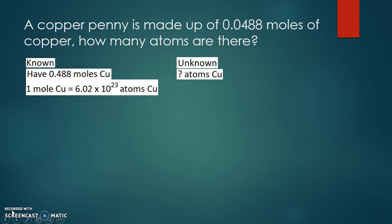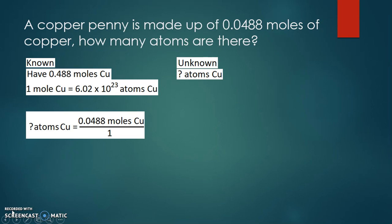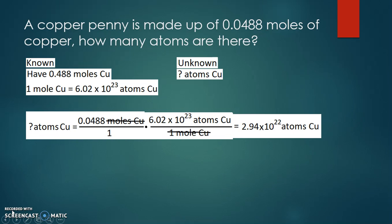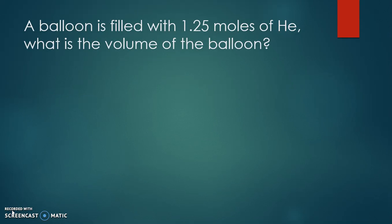Taking our given of 0.0488 moles of copper over one, we use our conversion factor with one mole of copper on the bottom and 6.02 times 10 to the 23rd atoms of copper on top. Moles divided by moles cancels out, leaving us with 2.94 times 10 to the 22nd atoms of copper in that copper penny.